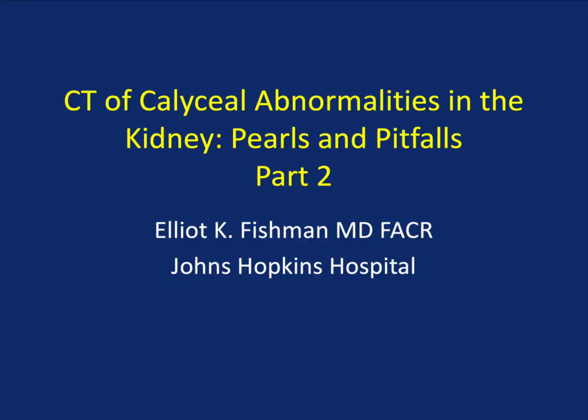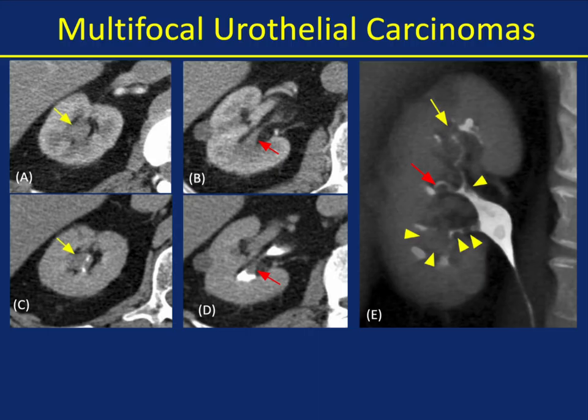Hi, this is Elliot Fishman and welcome to part two of CT of calyceal abnormalities in the kidney, pearls and pitfalls. I left off last time starting with the urothelial carcinomas. When we think about things that involve the calyces, we can speak about medullary sponge kidney, papillary necrosis, but the most important thing perhaps is transitional cell carcinoma.